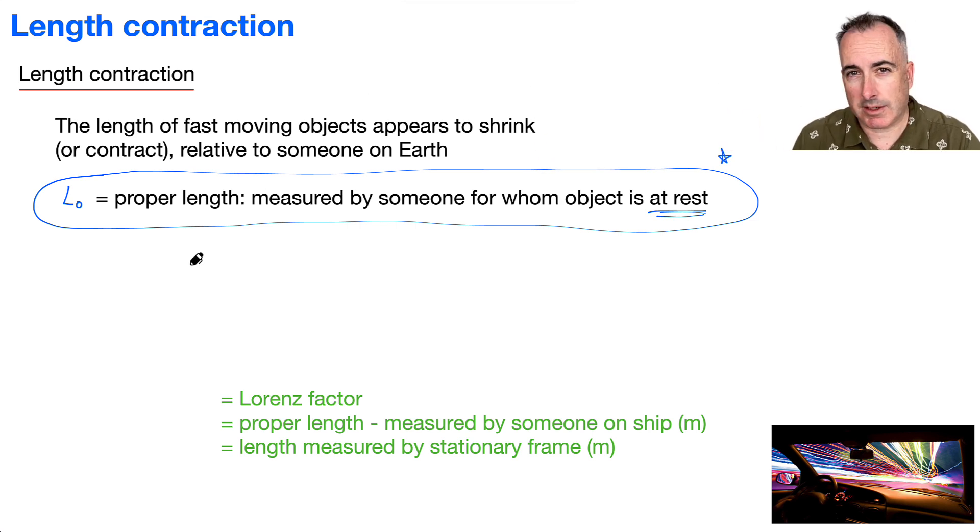We have an equation in your data booklet, and it goes like this: L equals L0 over gamma. Let's define our different variables. We've got gamma, which is the Lorentz factor. I'm going to write it down here: 1 over square root of 1 minus v squared over c squared.